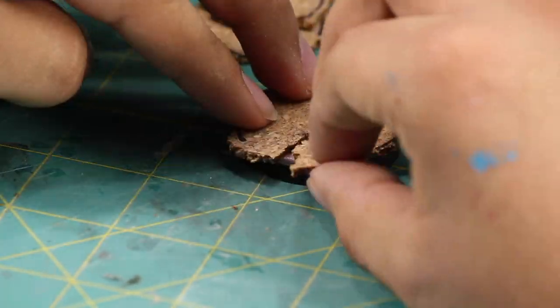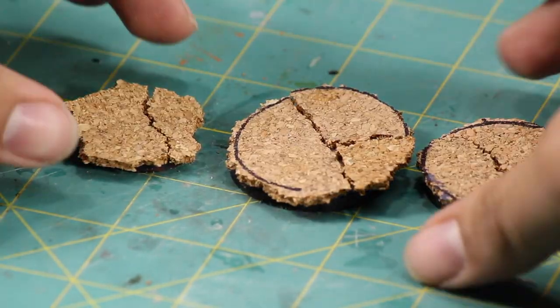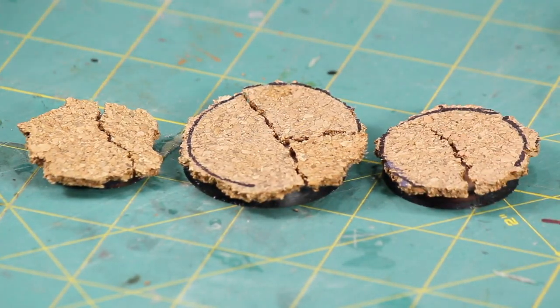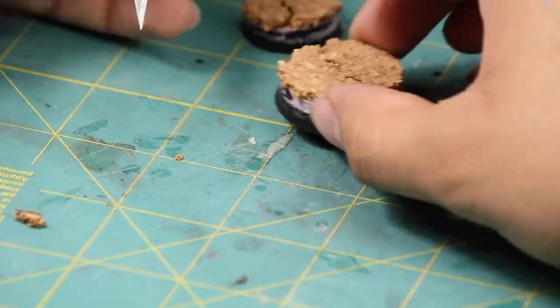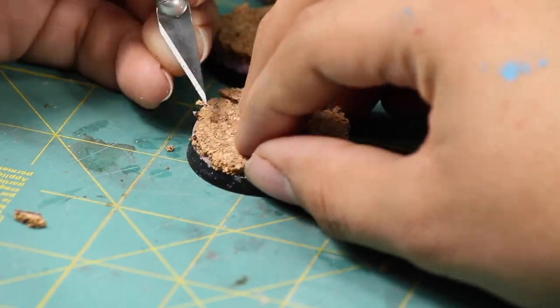I made some breaks in the cork to simulate cracks in the asphalt and to give a little bit of variety. I trimmed the edges so that they would be more flush by tearing away cork with my fingers and I also went in and gouged out some cork to add some potholes.